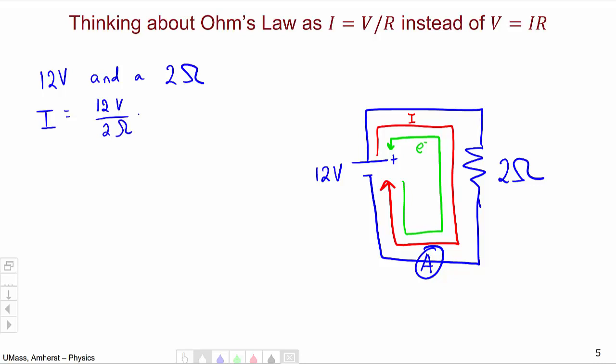So the current will be 12 volts over 2 ohms which is 6 amps. Fairly straightforward.